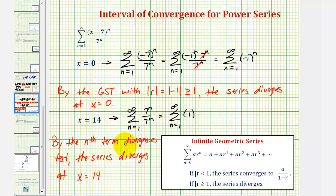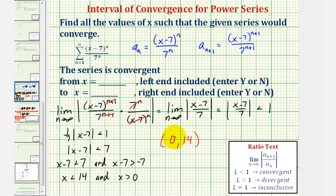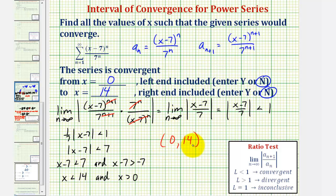The series was divergent at both endpoints, and therefore the interval of convergence remains the open interval from zero to fourteen. The series is convergent from x equals zero — it does not include the left endpoint — to x equals fourteen — it does not include the right endpoint either. The interval of convergence is the open interval from zero to fourteen.